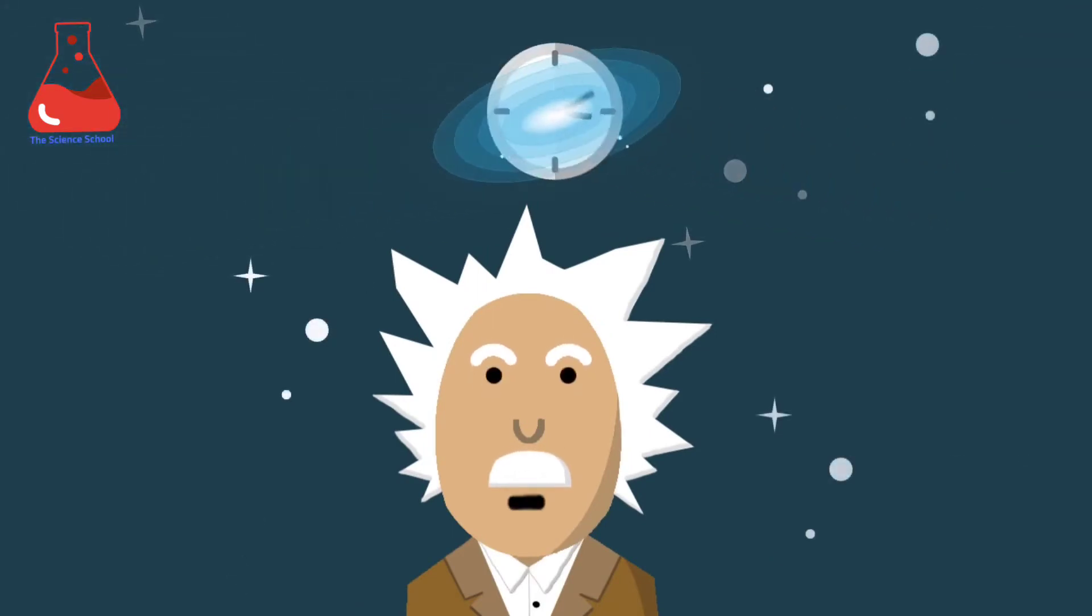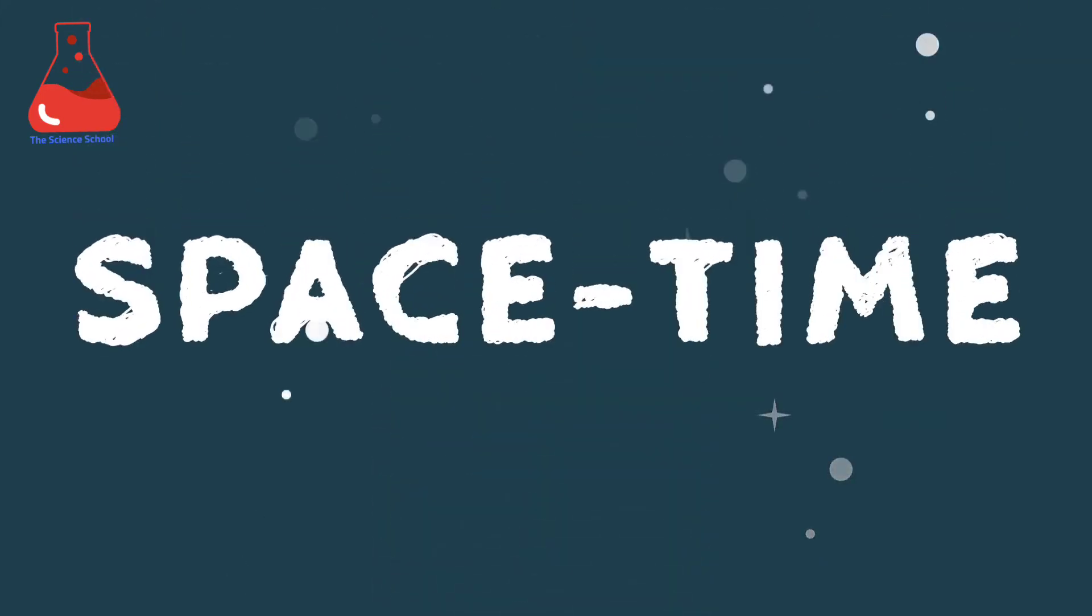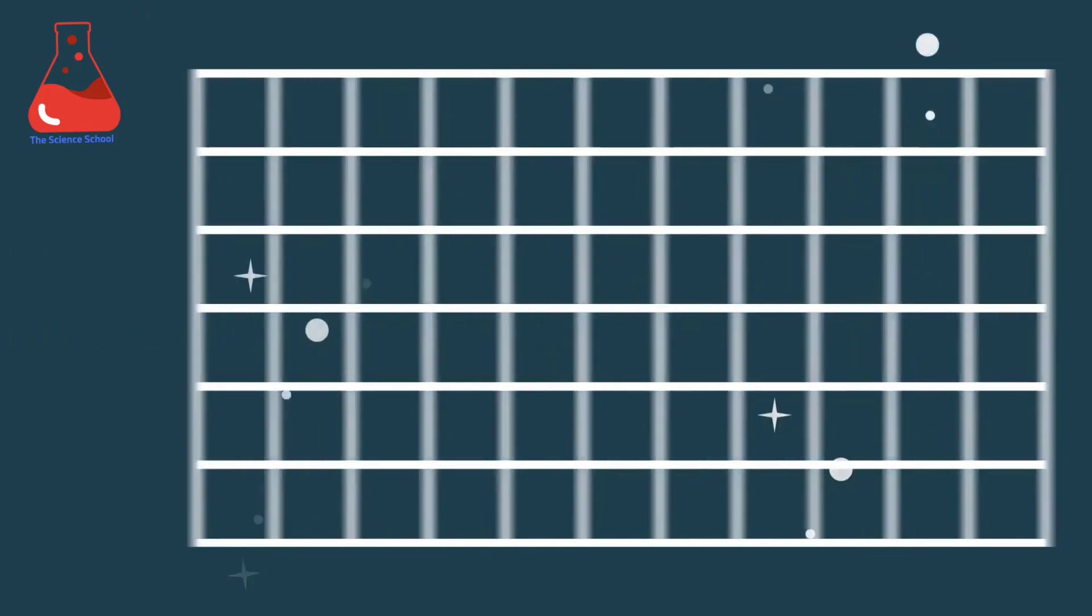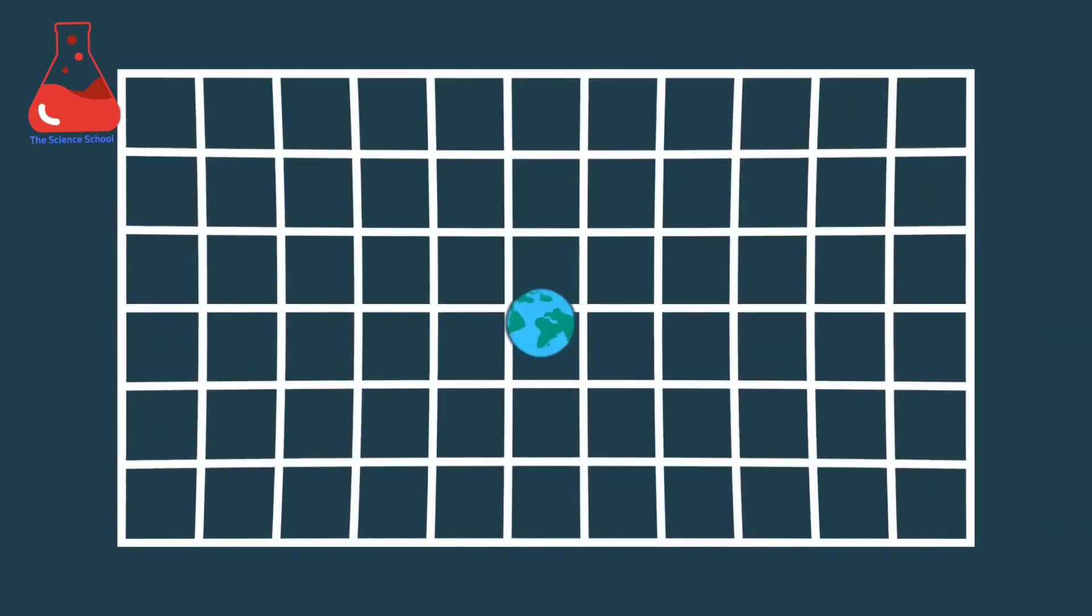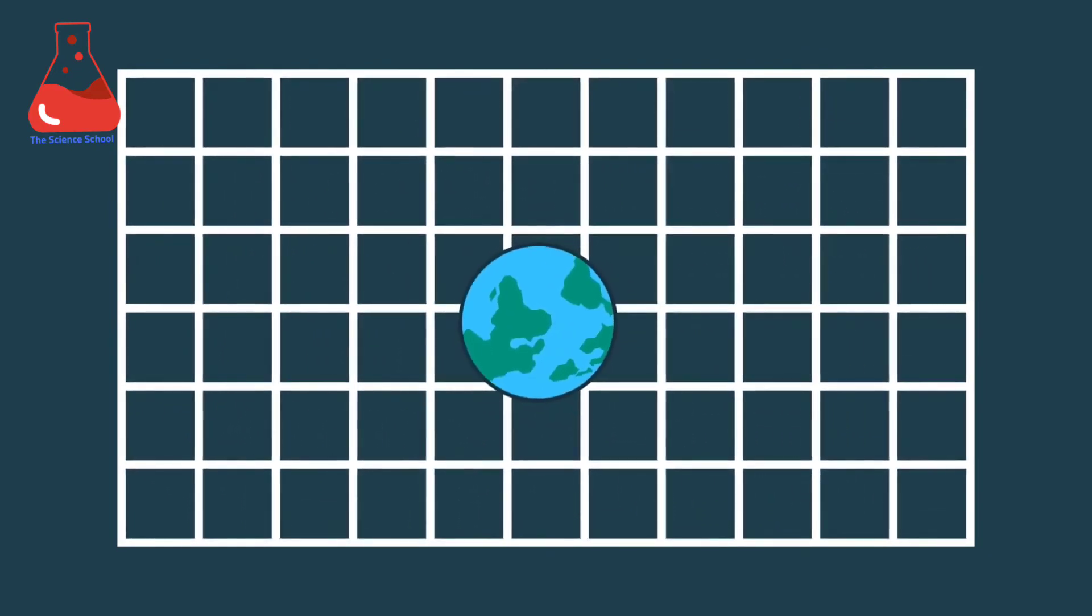What once were two different things now happen to be connected. You can imagine the whole universe as a single fabric of space-time, and heavy masses like Earth can warp or curve it. The warping of space-time is what we feel as gravity.